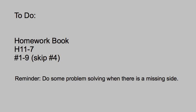Here's the homework: work out of the homework book, H11-7, numbers one through nine. Skip number four — that is the circle — because we're not going to find the perimeter of a circle just yet. We're going to focus on parallelograms and triangles. Numbers eight and nine are tricky, so read carefully and pay close attention to what they're asking. Remember to do some good problem solving when there's a missing side. Good luck.